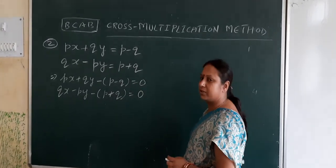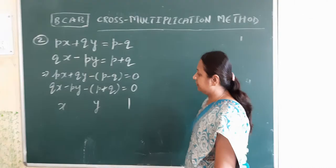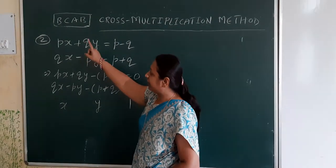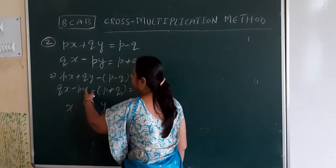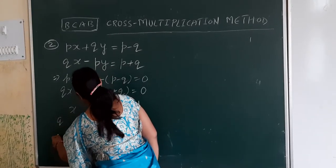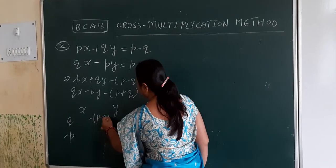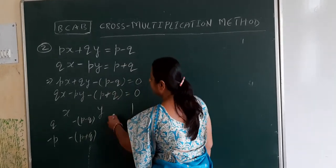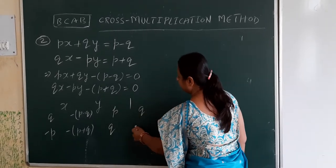Now write x, y, and 1 at equal distances. Remember b, c, a, b — where b is the coefficient of y, c is the constant term, a is the coefficient of x. So b is q in the first equation and minus p in the second. c is minus p minus q and minus p plus q. a, the coefficient of x, is p and q. Then repeat b: q and minus p.